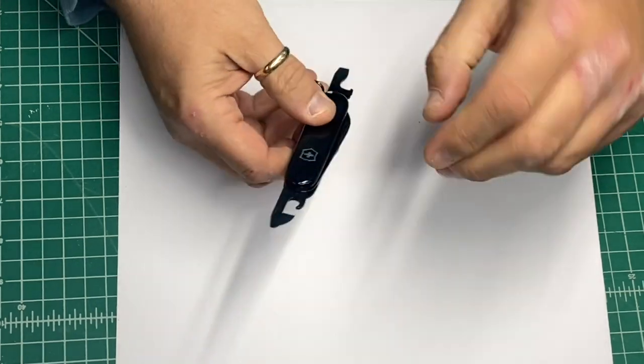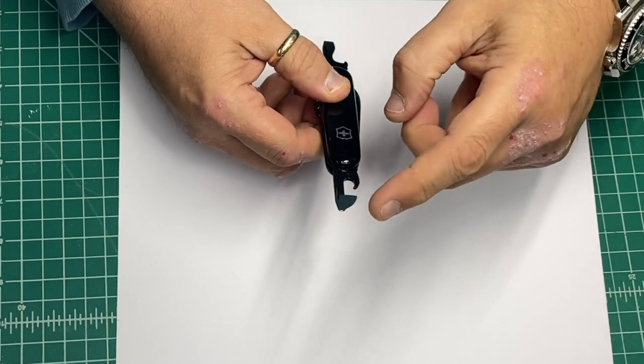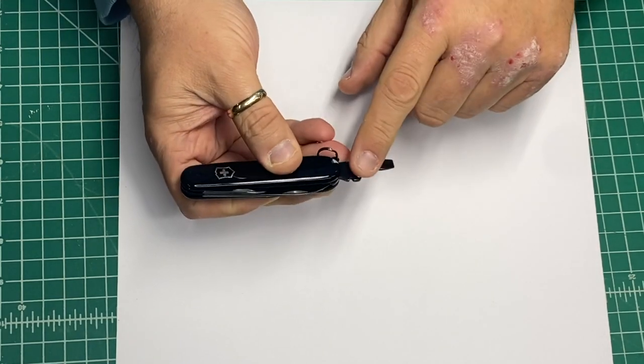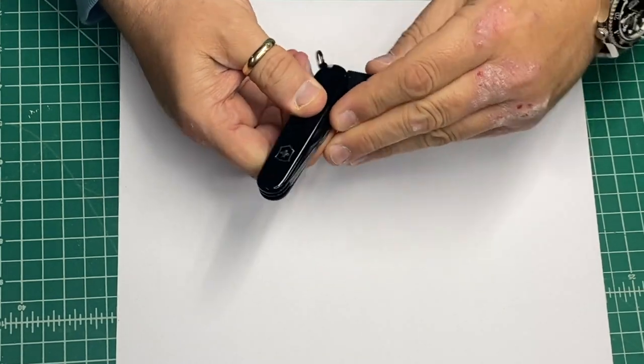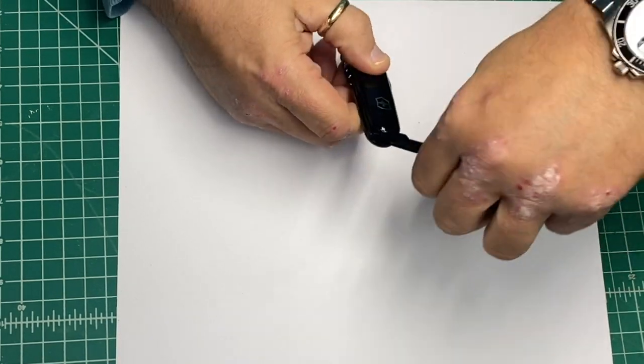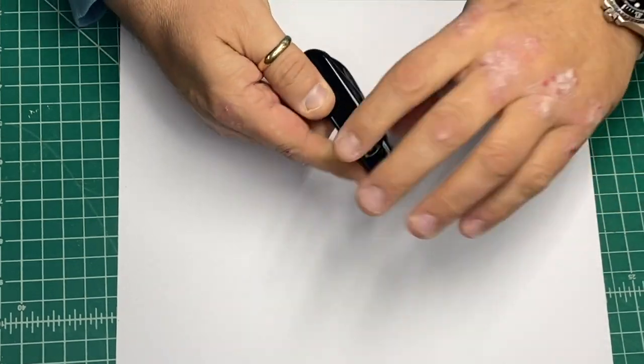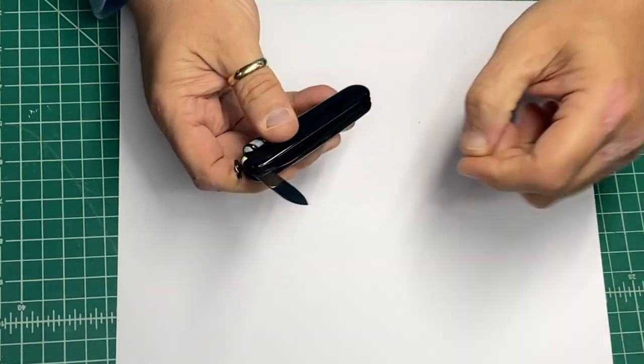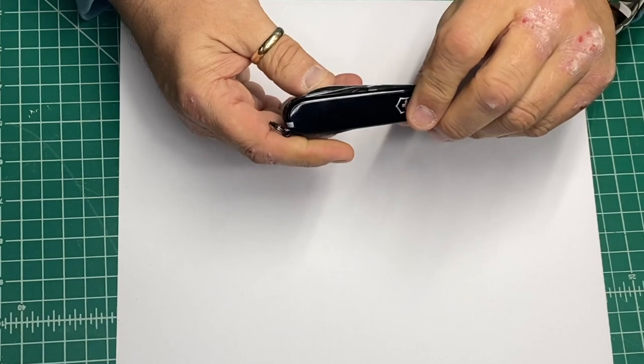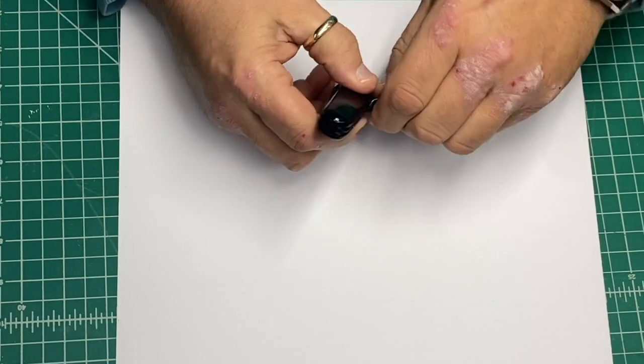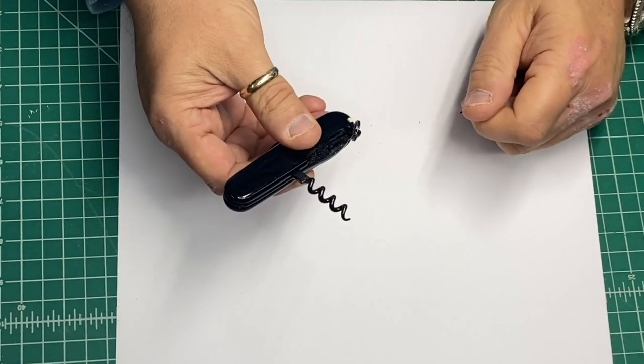This one comes with can opener, small screwdriver, bottle opener, large screwdriver, large blade, small blade, and the corkscrew.